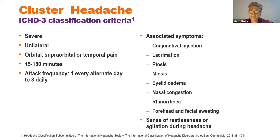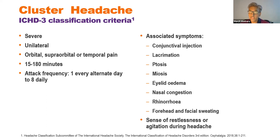The ICHD criteria capture the cluster headache phenotype really well. Cluster headaches tend to be strictly unilateral, though side variable. Pain is severe, predominantly around the orbit, supraorbital region, forehead, and temple. Attacks last from 15 minutes up to three hours, and attack frequency ranges from one every other day to as many as eight daily.